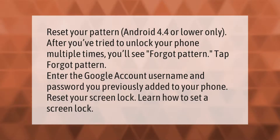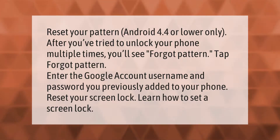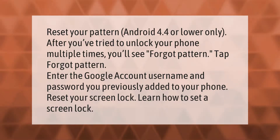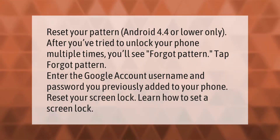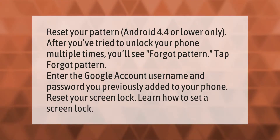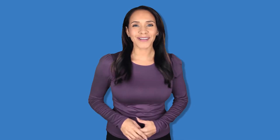To reset your pattern on Android 4.4 or lower only: after you've tried to unlock your phone multiple times, you'll see 'Forgot Pattern' — tap it. Enter the Google account username and password you previously added to your phone to reset your screen lock. Learn how to set a screen lock. Thank you for watching, please subscribe and hit the bell notification.